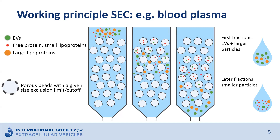In the end, this will lead to a successful separation of the larger particles from the smaller ones. The first fractions collected from the column will be enriched in larger EVs and similarly sized particles such as lipoproteins. The later fractions will contain the larger majority of the free protein, and also EVs that were smaller than the size exclusion limit.